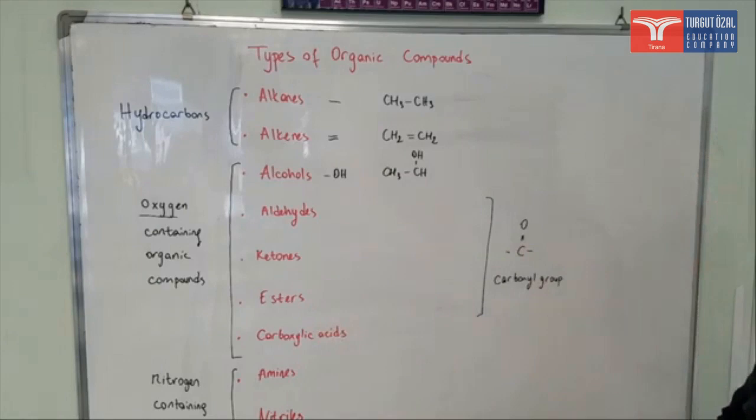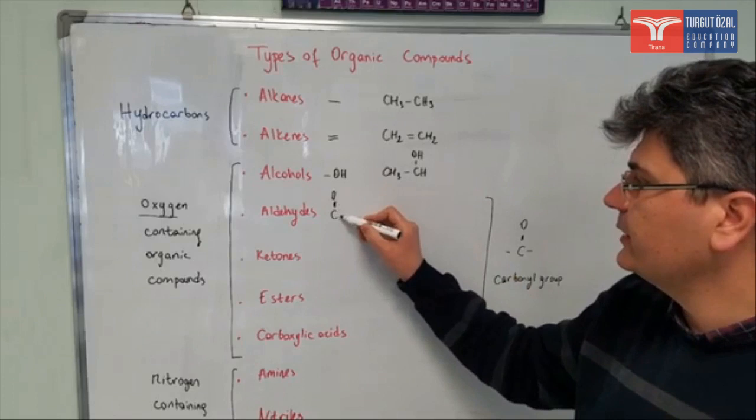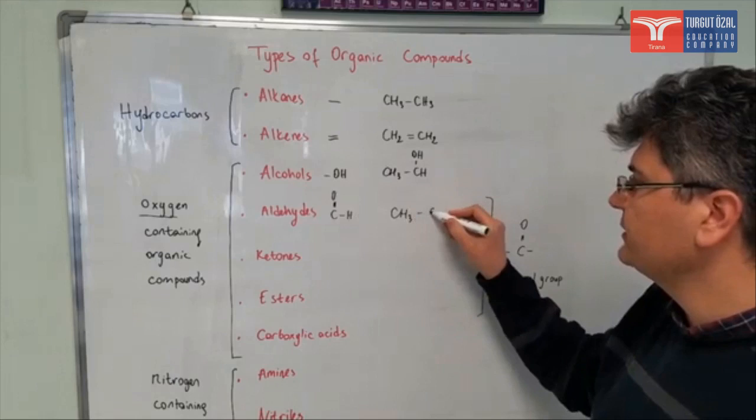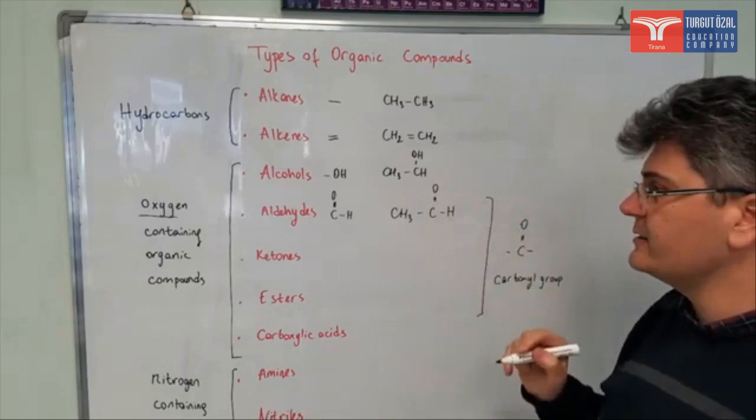So let's see them one by one. Aldehydes contain this carbonyl group, but the carbonyl carbon also contains a hydrogen atom. So for example CH3-COH is an aldehyde. This is ethanal.